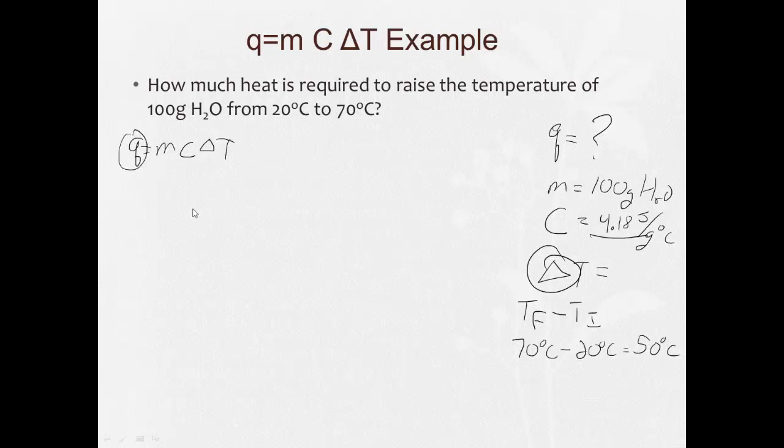That's isolated, so we just have to plug and chug. M, 100 grams. C, 4.18 joules over grams degrees Celsius. And delta T, 50 degrees Celsius. First thing, I'm going to look and see what I can cancel. I have grams on top, grams on the bottom. I have degrees Celsius on top, degrees Celsius on the bottom. And for my unit, I'm left with joules. Is joules a unit of heat? Yes. So I set this up correctly.